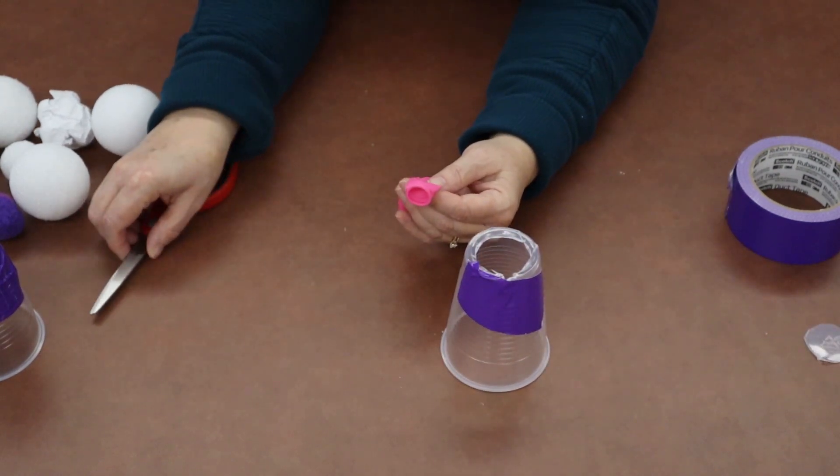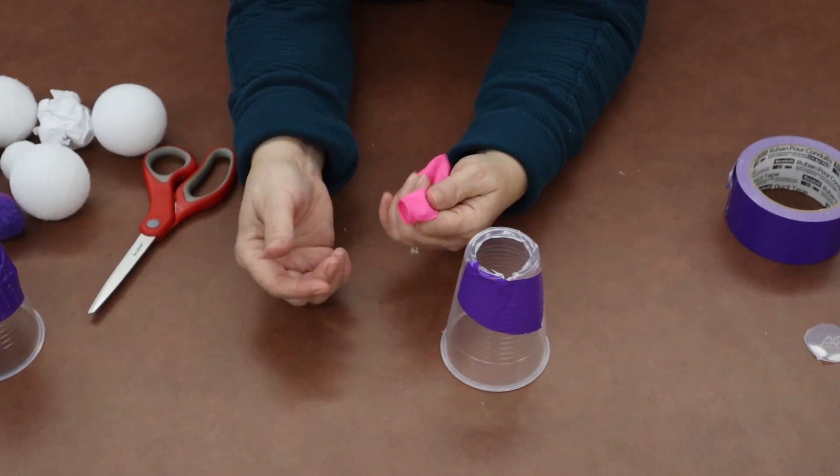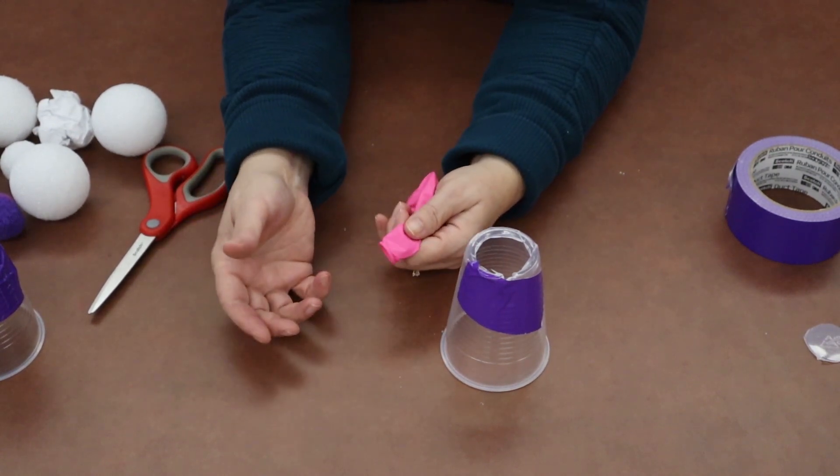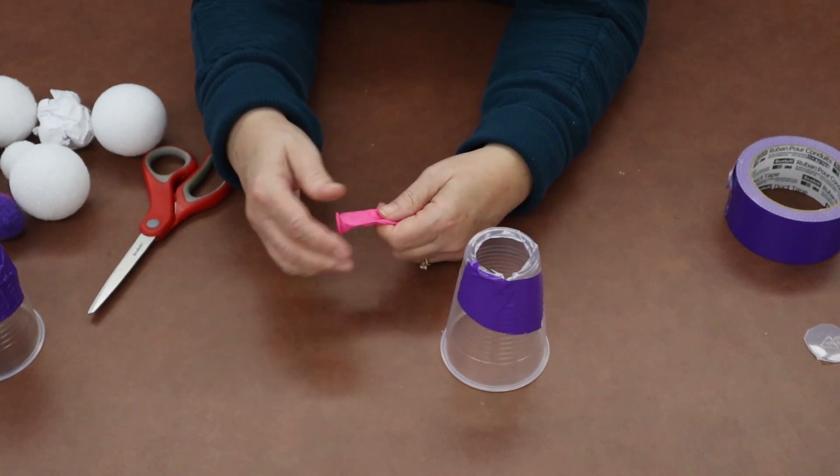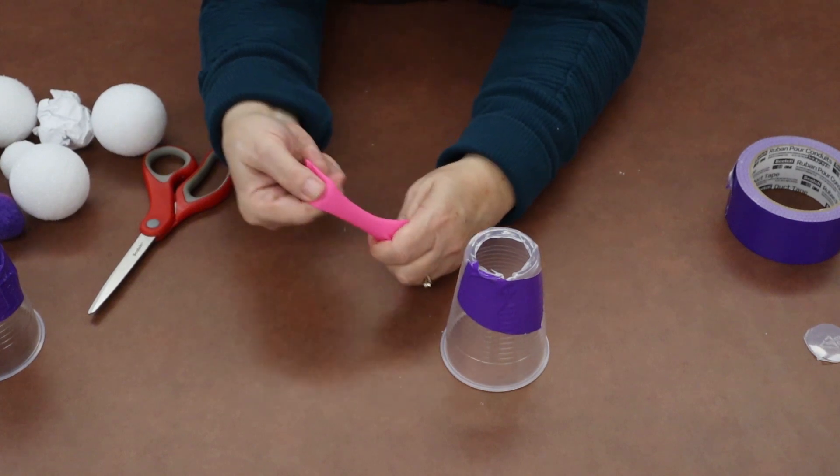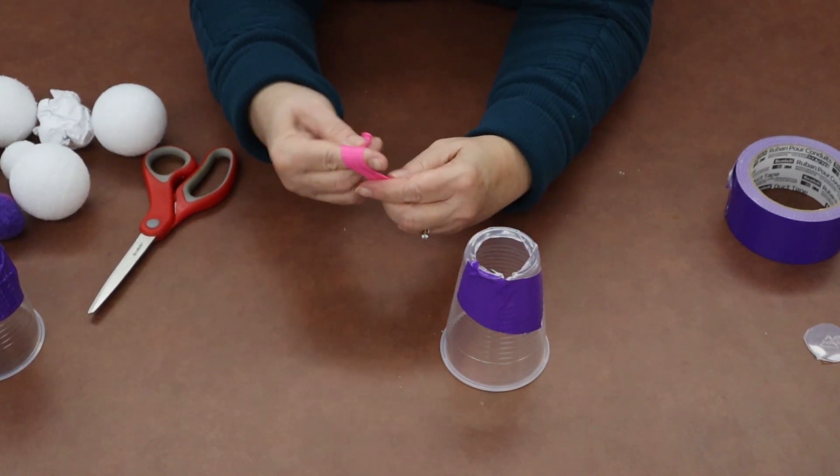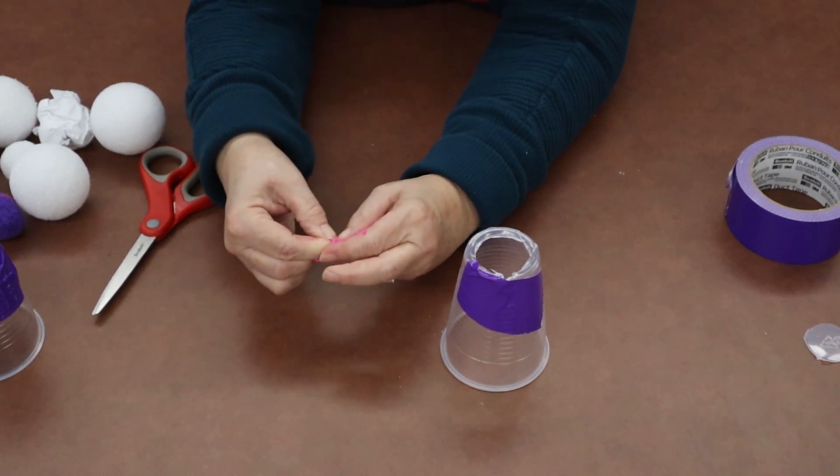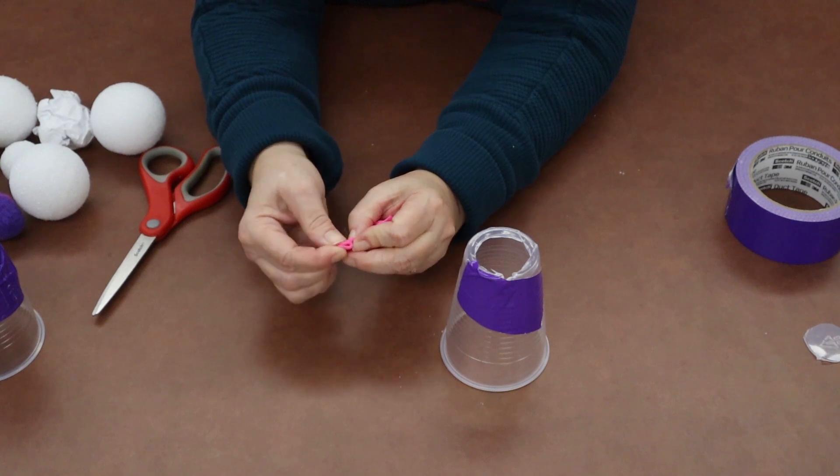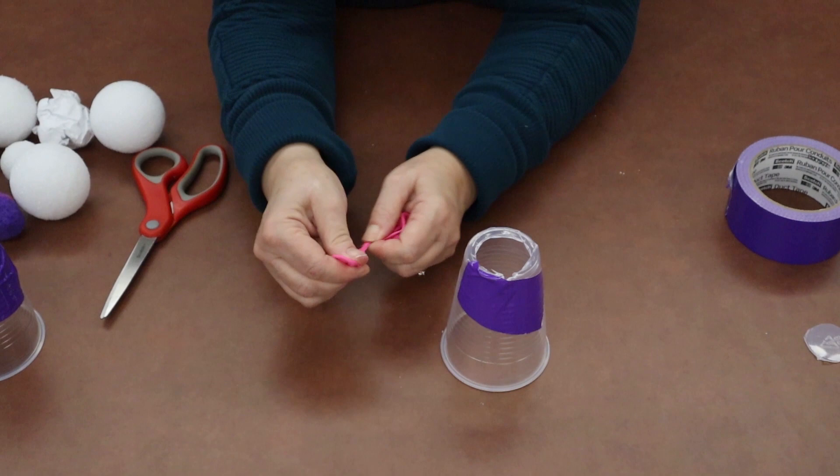The next step we're going to take is taking our balloon. You might also have to ask an adult or an older sibling to help you with this if you're not very versed in tying a knot in a balloon, but basically you just want to close off this end of the balloon. So we'll just take the balloon and you're tying it off like you would if you had blown up the balloon, but we're not actually going to blow up this balloon.